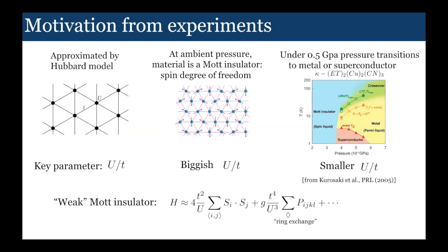We know that the key parameter when working at half-filling is U over T, the strength of the Hubbard interaction. If you're working at very large U, once the charge fluctuations freeze out you're left with a spin model, so we get the Heisenberg model on the triangular lattice. But in these materials U over T is about 8, which actually isn't that large.